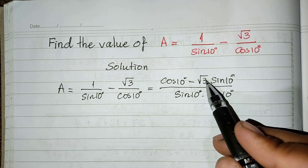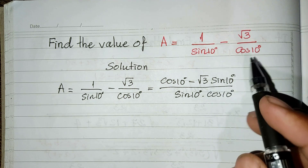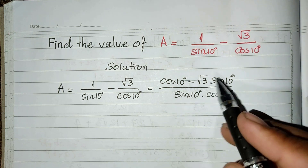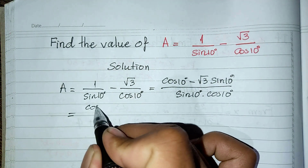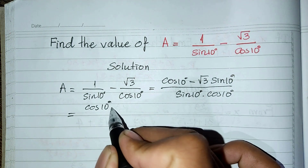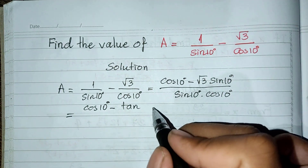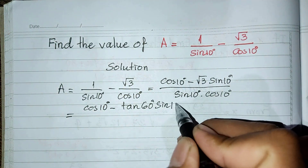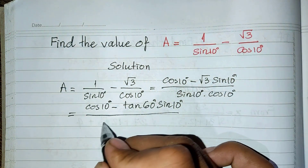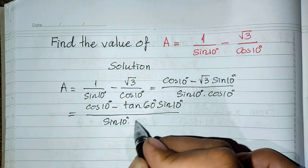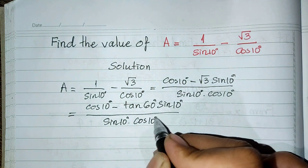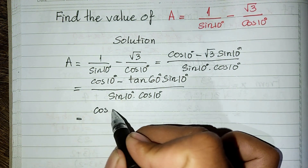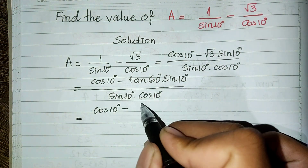For this square root 3, I can also write it as tan of 60 degrees. So it equals cosine of 10 degrees minus tan of 60 degrees multiplied by sine of 10 degrees, divided by sine of 10 degrees multiplied by cosine of 10 degrees.